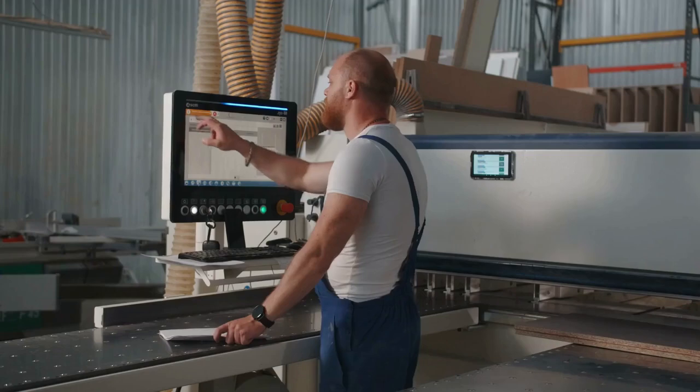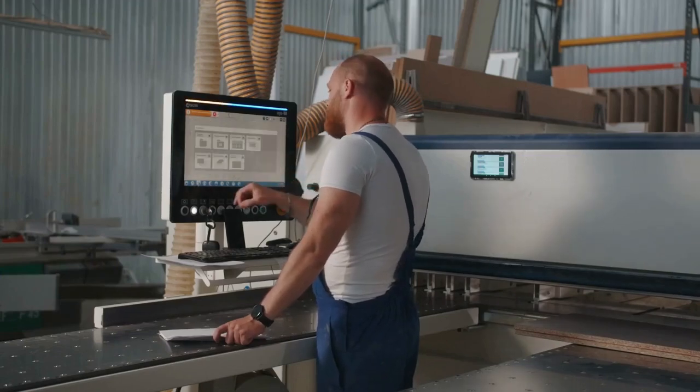The exact steps for a factory reset vary slightly depending on your Xprinter model, but it often involves accessing a menu on the printer's control panel. You'll usually find options like settings, system, or maintenance.